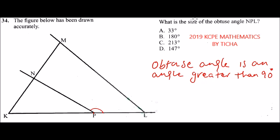And when you do that, you get the angle is 147 degrees. So from the answers, this is the correct answer, that is D. Here you are being tested whether you know how to use your protractor.